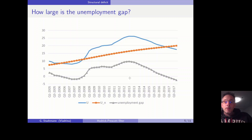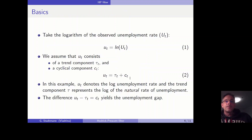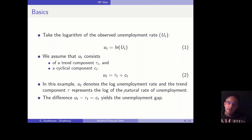Today I would like to introduce the Hodrick-Prescott filter. We can use the HP filter in order to compute the natural rate of unemployment, and once we have found this measure we can also easily compute the unemployment gap. In a first step, we take the natural log of the observed unemployment rate, and we assume that this variable consists of a trend component tau and a cyclical component C_t.